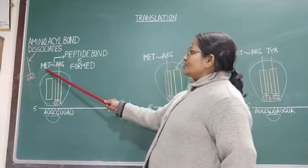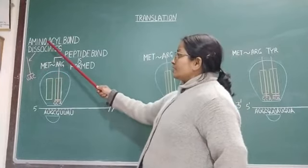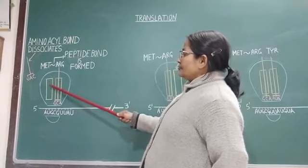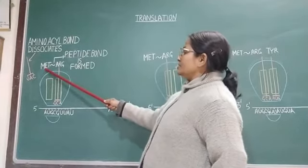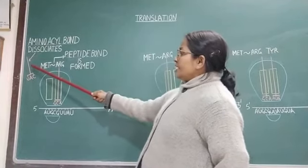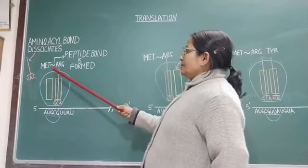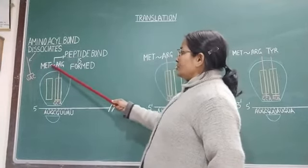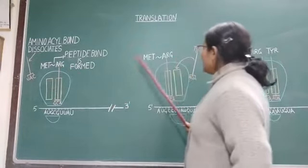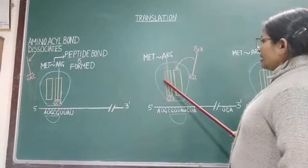Just after the formation of peptide bond between these two amino acids, the amino acid bond present between this tRNA at P site and the amino acid is dissociated. So, this tRNA now becomes released into the cytoplasm and the polypeptide chain which is now two amino acids long is now shifted to the P site. Here we can see that the polypeptide chain is shifted on the P site.